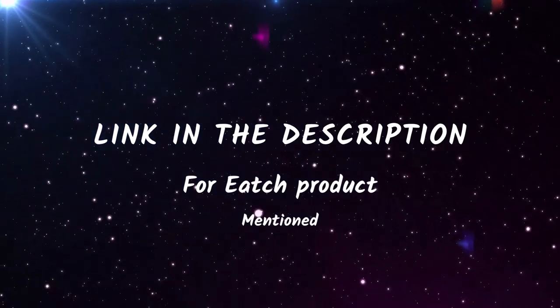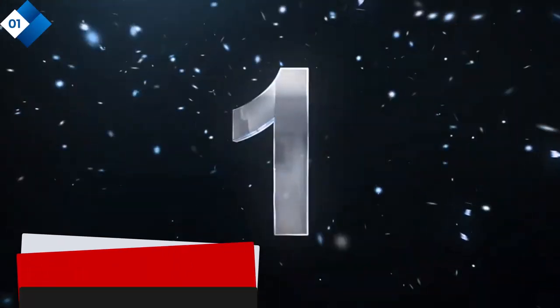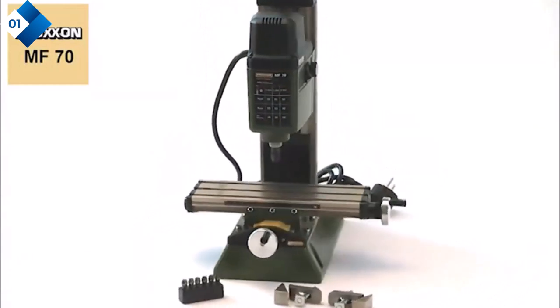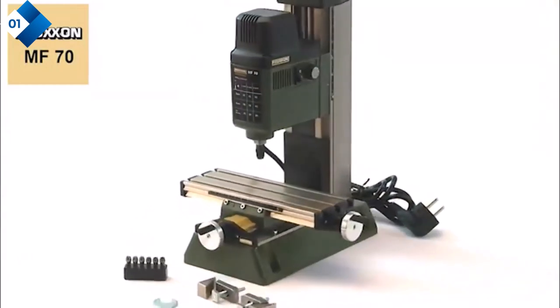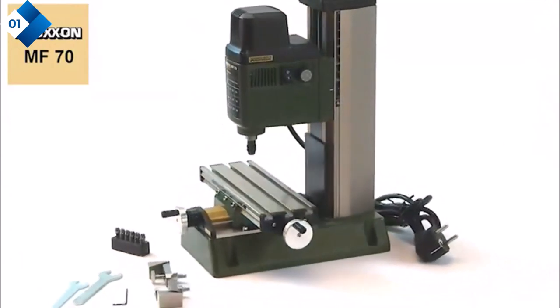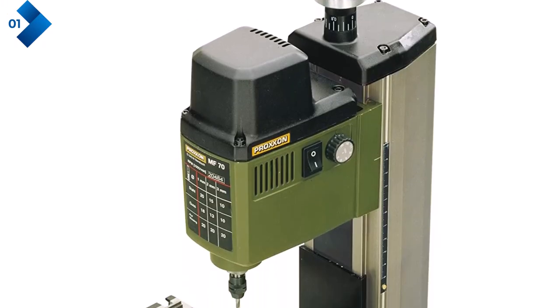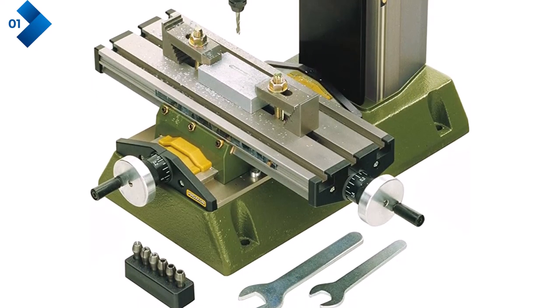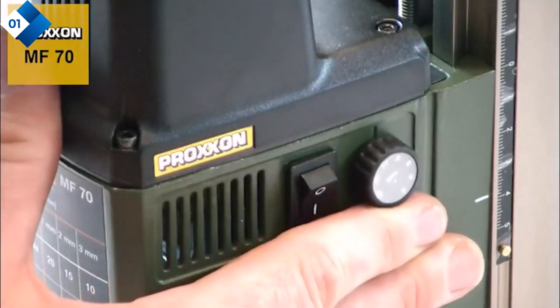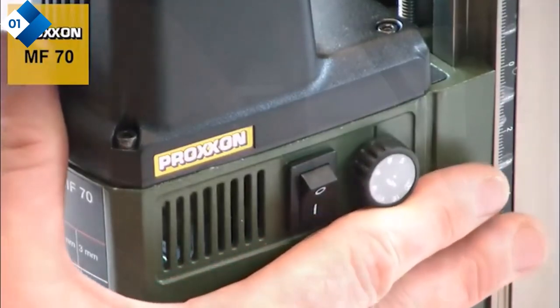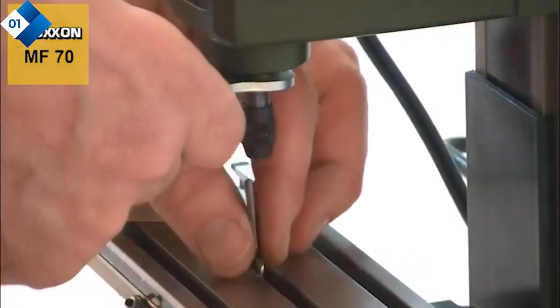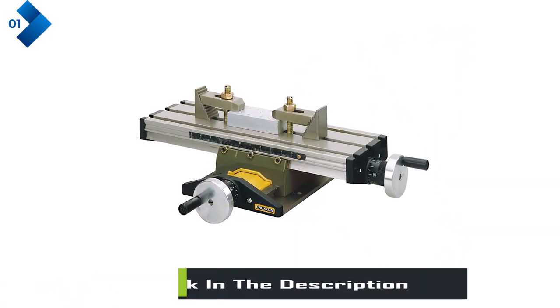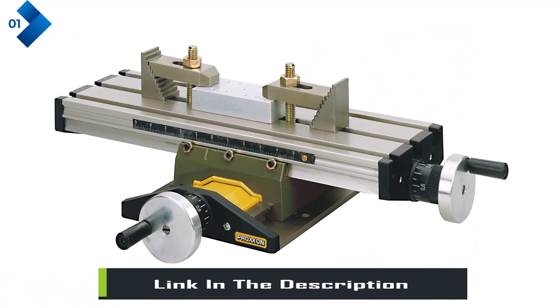Number one: Proxon micro milling machine. This milling machine is designed to grow with your needs, offering a range of optional accessories that allow you to expand its capabilities and tailor it to your specific requirements. With add-ons like the dividing attachment or compound table, you can enhance the functionality and precision of the micro mill, enabling you to take on more advanced projects with ease. This adaptability makes it a wise long-term investment for both professionals and dedicated hobbyists. Crafted from high-quality materials, this micro mill is built to last.